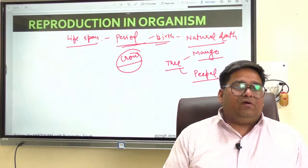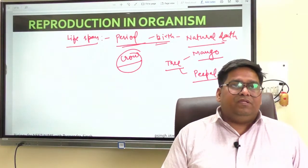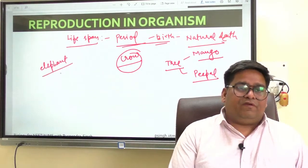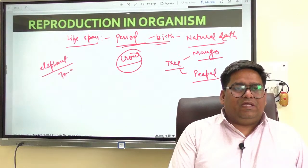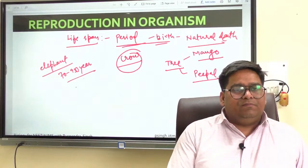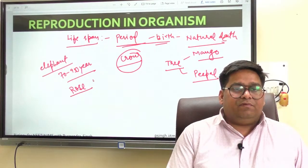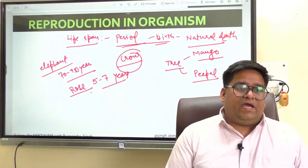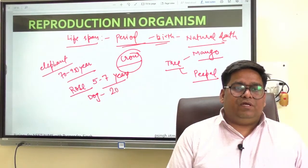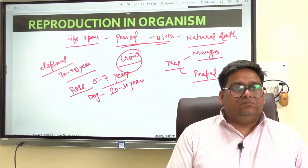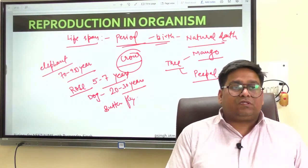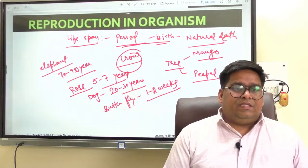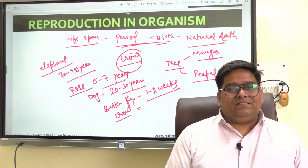To illustrate the life span: the life span is a period between your birth and your natural death. For example, the elephant has a life span of around 70 to 95 years. Similarly, you will have the rose, which has a life span of 5 to 7 years. Then the dog has a life span of 20 to 30 years. The butterfly has a life span of around 1 to 2 weeks only. The crow is hardly 15 years.